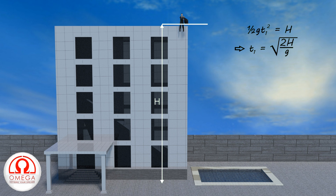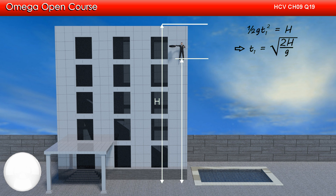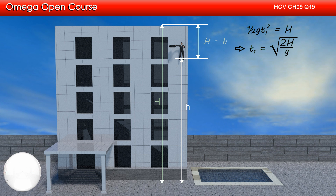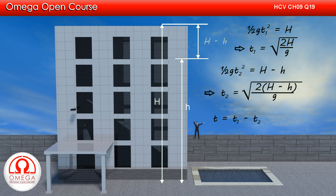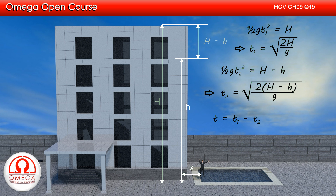When the man throws his bag, he is at height h from the ground, meaning he has fallen through a height H − h. Assuming t2 time has elapsed since he slipped, (1/2) g t2² = H − h, so t2 = √(2(H − h)/g). After throwing the bag, the man has (t1 − t2) time remaining. During this time he must travel a minimum horizontal distance x, so his minimum horizontal speed v0 = x / (t1 − t2).